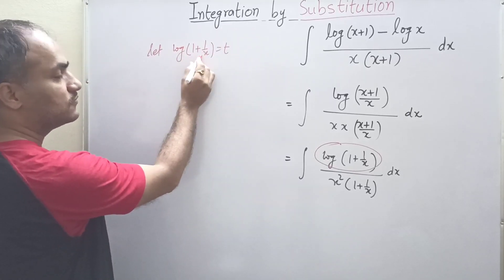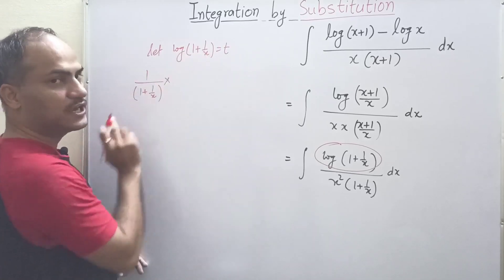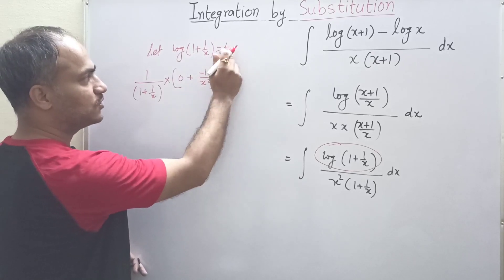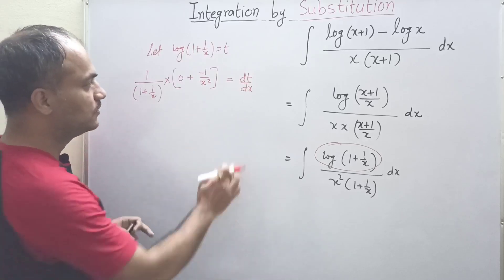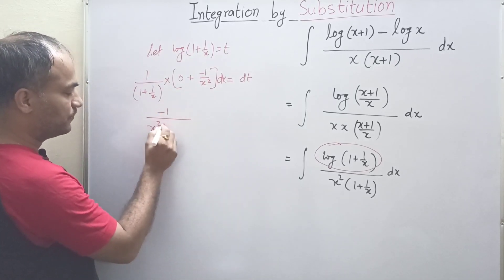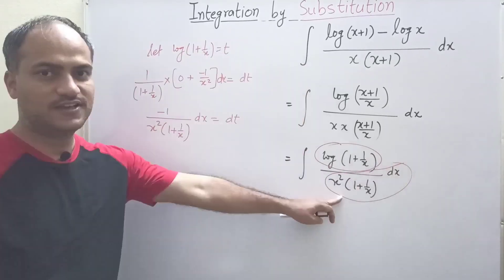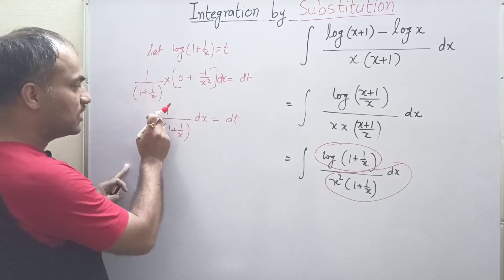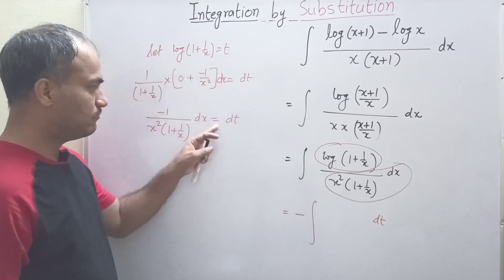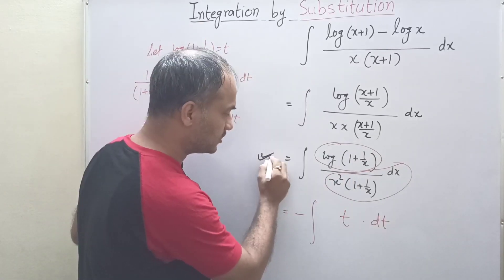Differentiating t = log(1 + 1/x) with respect to x: the derivative of log u is 1/u, so we get 1/(1 + 1/x), and then by chain rule we differentiate (1 + 1/x) again. The derivative of 1 is 0 and the derivative of 1/x is minus 1/x², giving dt/dx = (−1/x²) / (1 + 1/x). Rearranging, we get dx/(x²(1 + 1/x)) = −dt, so this entire expression becomes −dt in the integral.